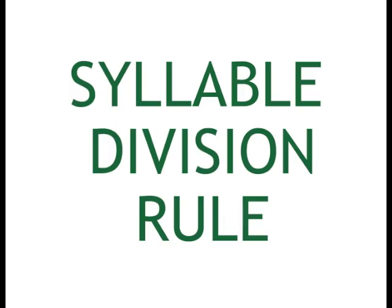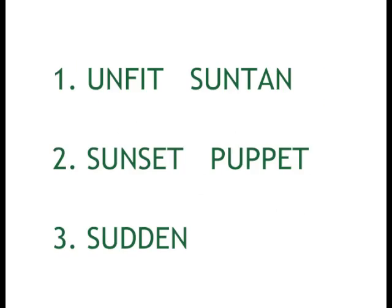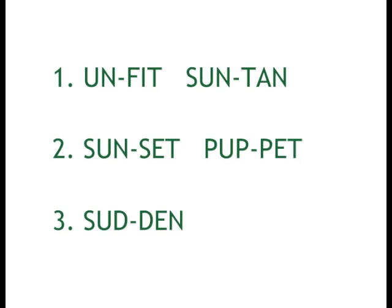Here is our first syllable division rule: if you have two consonants together, you will divide between the consonants. Look at these words and try to figure out where to divide — remember that you're dividing between the two consonants. Here they are divided. The syllables that end in a consonant will be short.